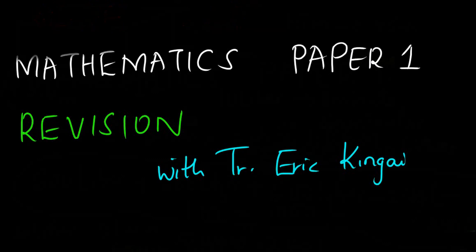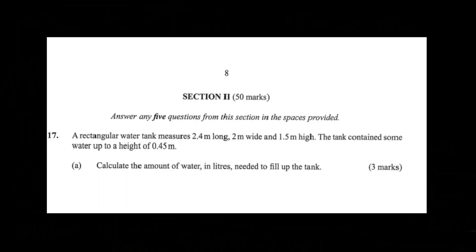Question number 17 states that a rectangular water tank measures 2.4 meters long, 2 meters wide and 1.5 meters high. The tank contained some water up to a height of 0.45 meters. Calculate the amount of water in liters needed to fill up the tank. Let me draw this tank.